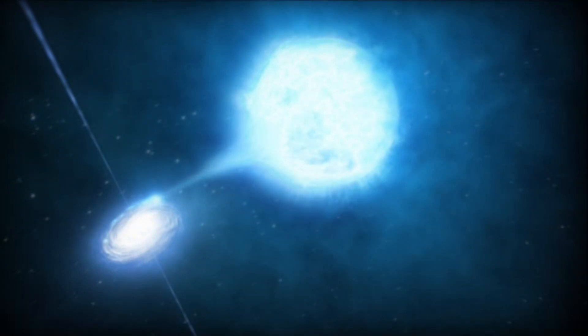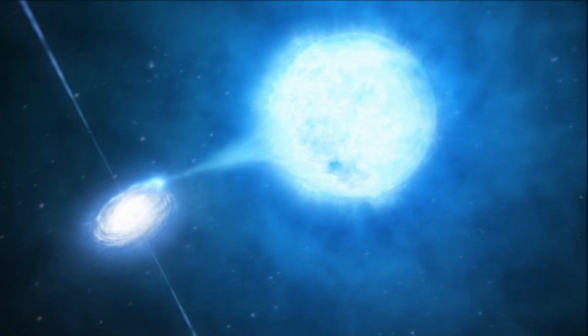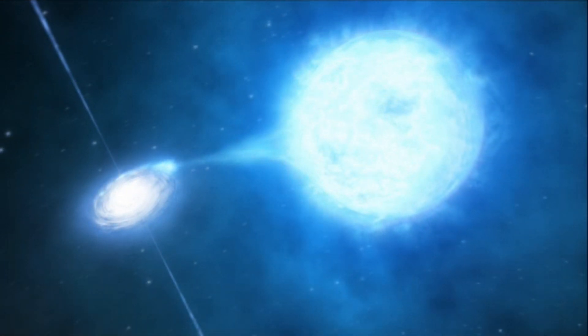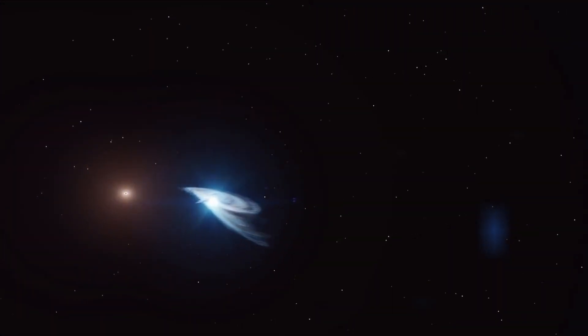Now, how do supermassive black holes form? Black holes tend to grow larger and larger through mergers. And that's expected to be the case for supermassive black holes, too. Although there are many theories about how this type of black hole forms.